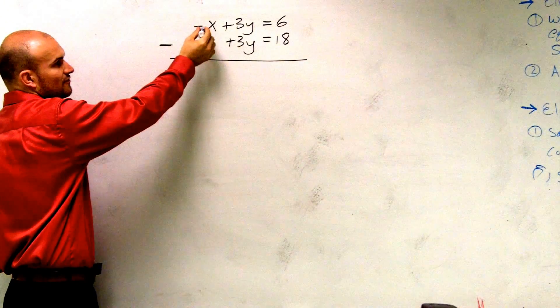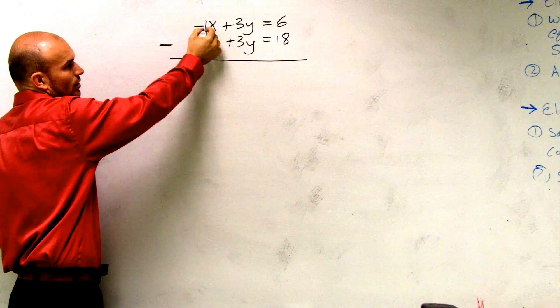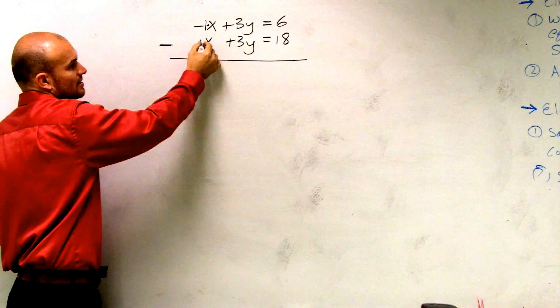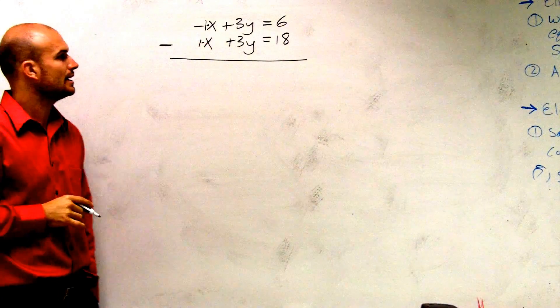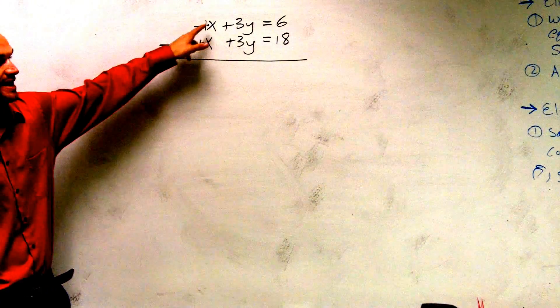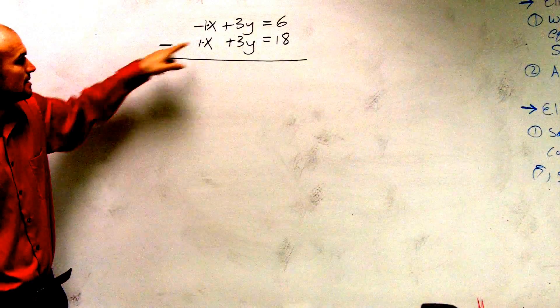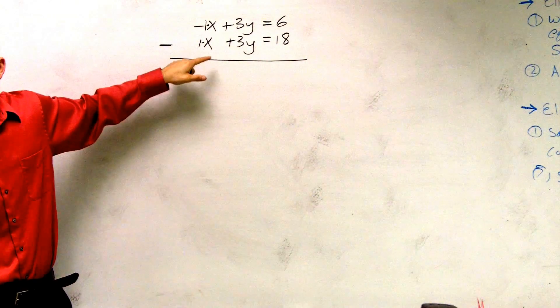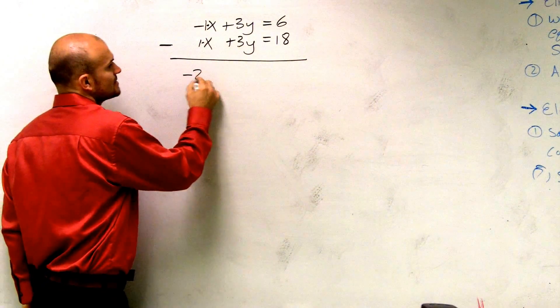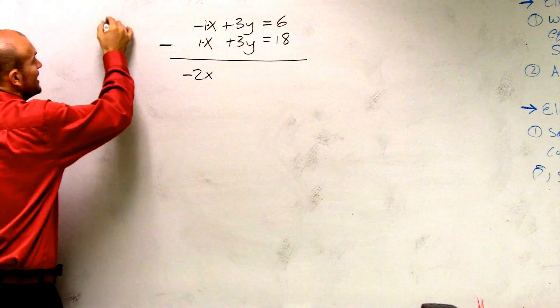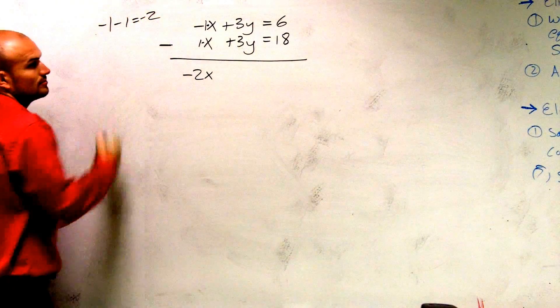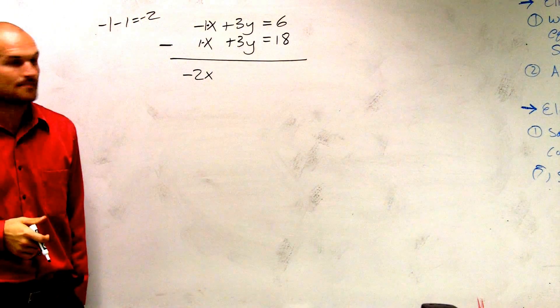Remember, if there's no number in front, we can represent those as a 1, right? Negative 1x and a positive 1x. So what we have is negative x or negative 1x minus another 1x is going to be minus 2x. Negative 1 minus 1 equals negative 2. We just have x's included with them.